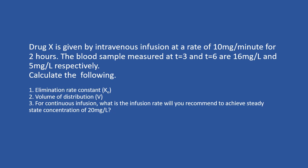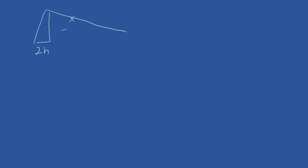From this question onwards we will practice the calculation for intravenous infusion administration. Pause the video to attempt the questions. To solve this, sketch out the graph to get a better picture. At t equals 2 the concentration is unknown; at t equals 3 it is 16; and at t equals 6 it is 5. First, we need to solve for ke.